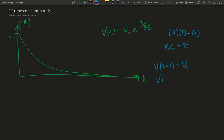V at T equals tau, which is the same as RC, is the same as V0 times E to the minus RC over RC. That cancels out. That's the same as saying V0 times E to the minus 1, which is the same as saying V0 divided by E.